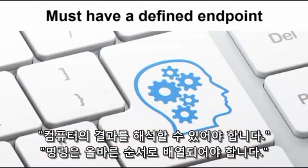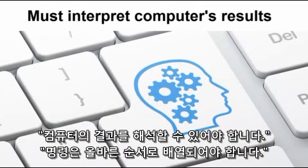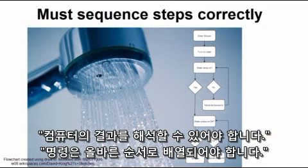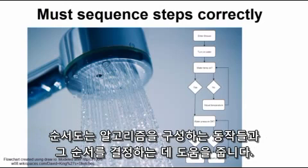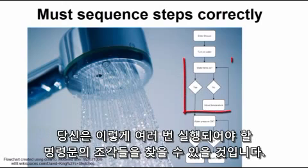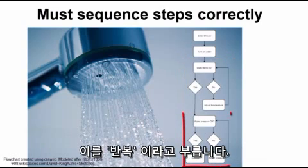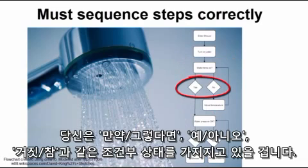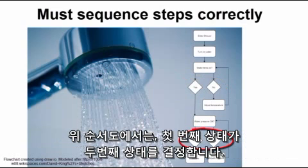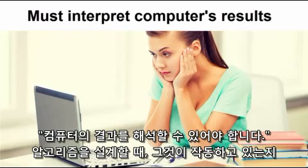You need to have a defined endpoint — your algorithm should answer a question or produce a result, and be clear when it has finished. Instructions must be sequenced in the correct order to complete the task; flowcharts can help identify actions and the order in which they need to occur. You may find sets of instructions that need to happen over and over — this is called a loop or iteration. You may also have conditional statements that affect variables: if/then, yes/no, true/false, where the first condition dictates the second.